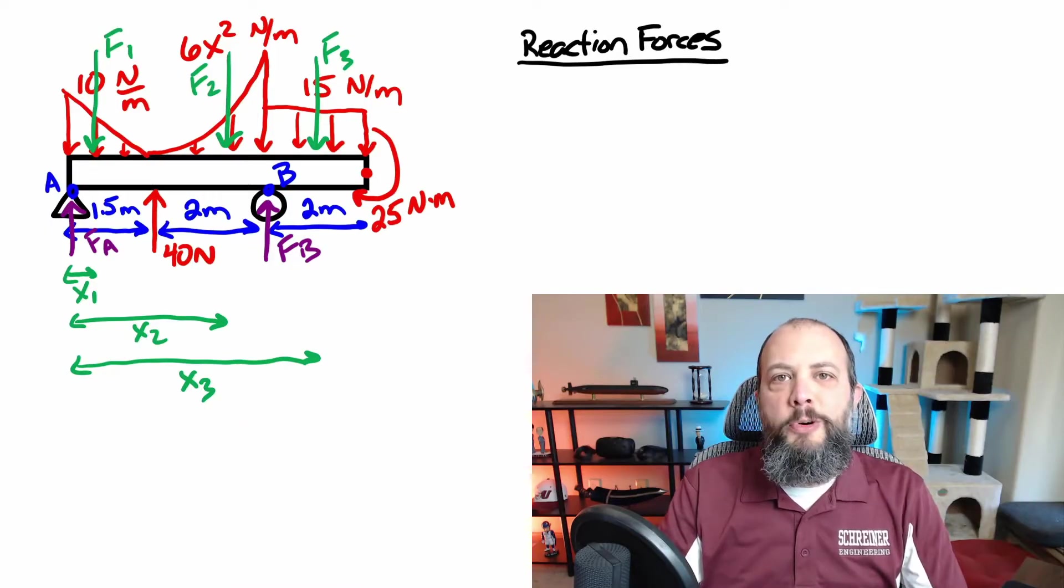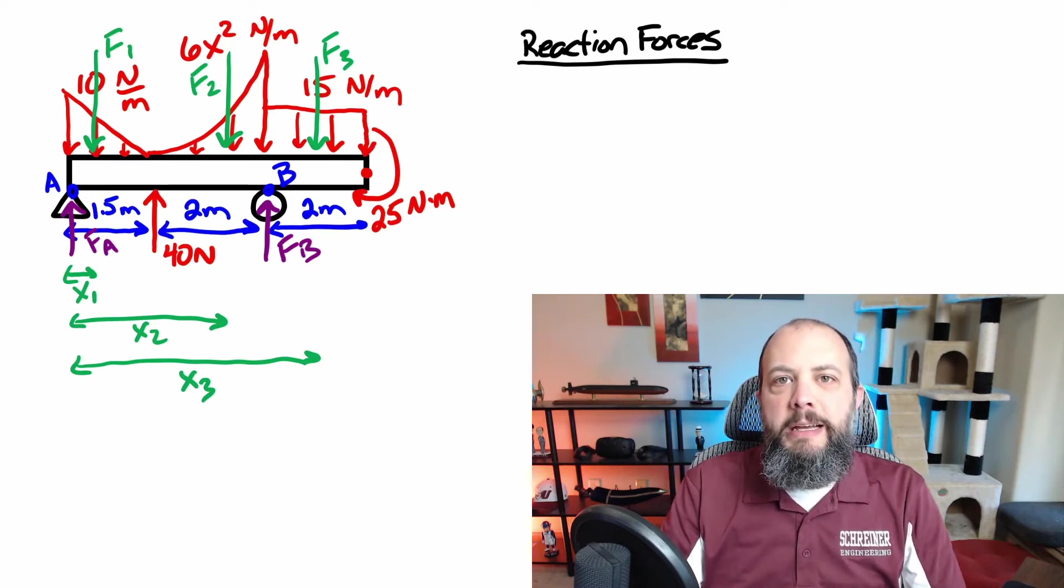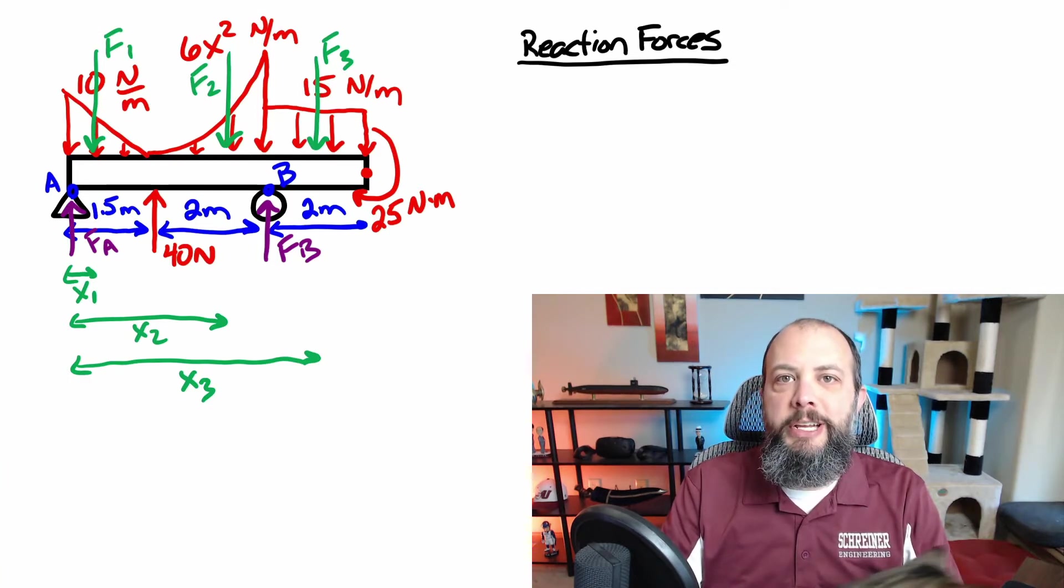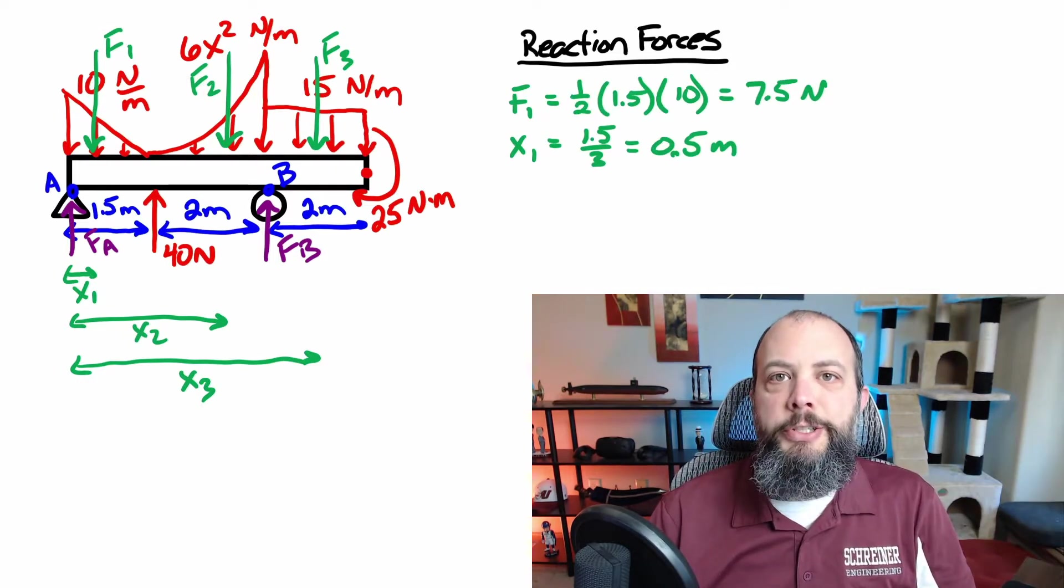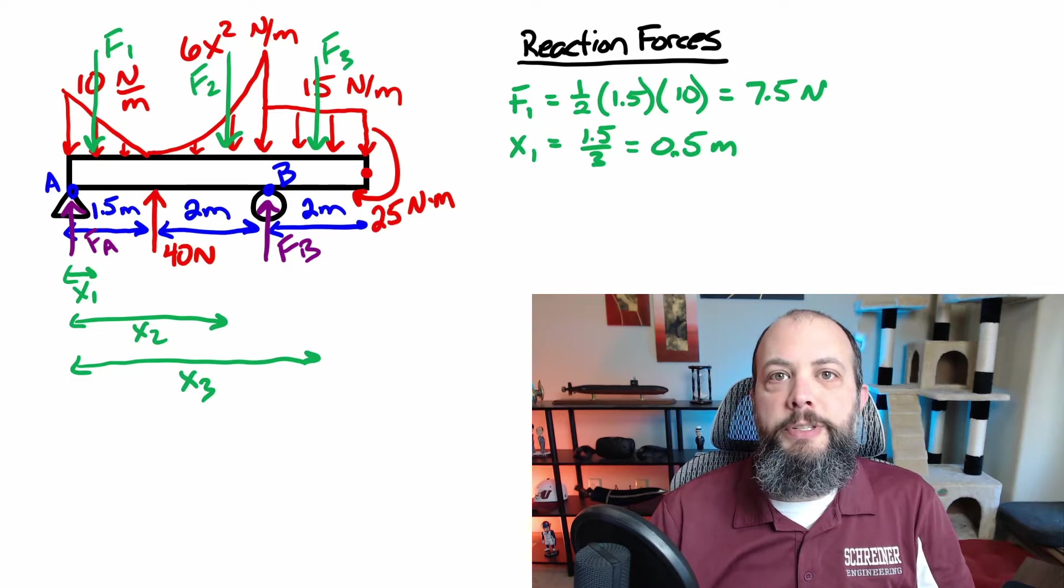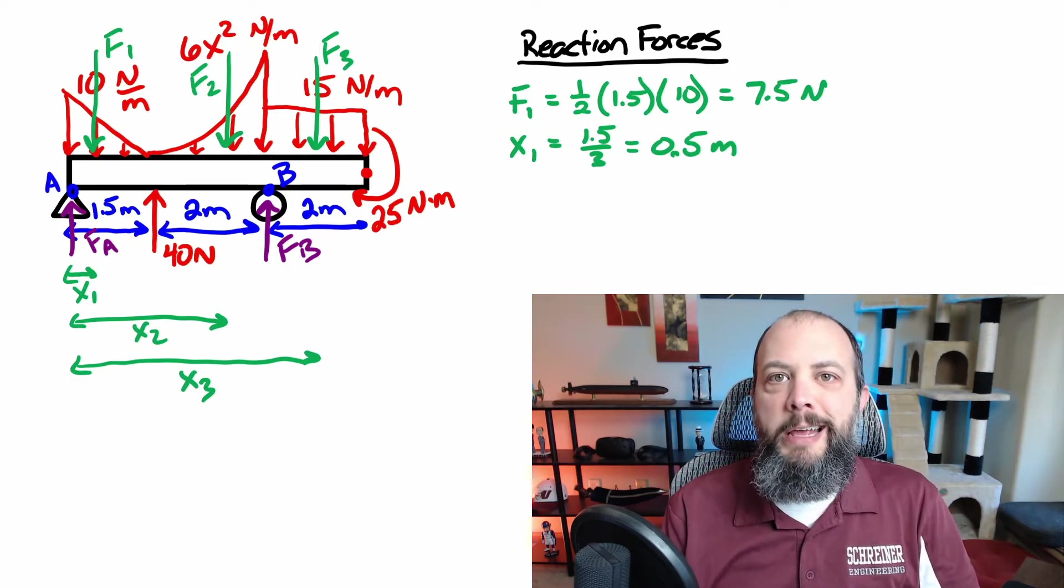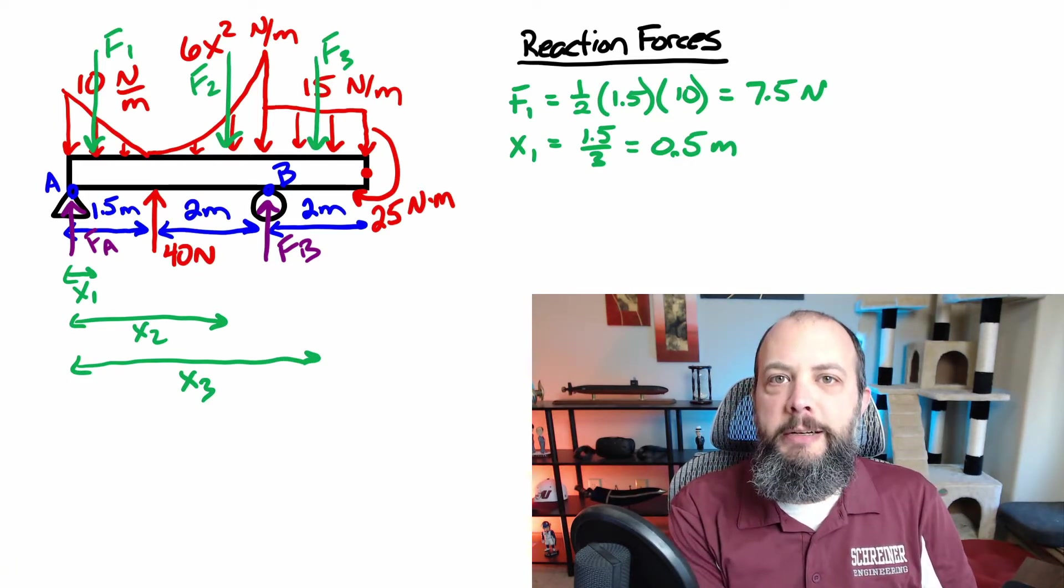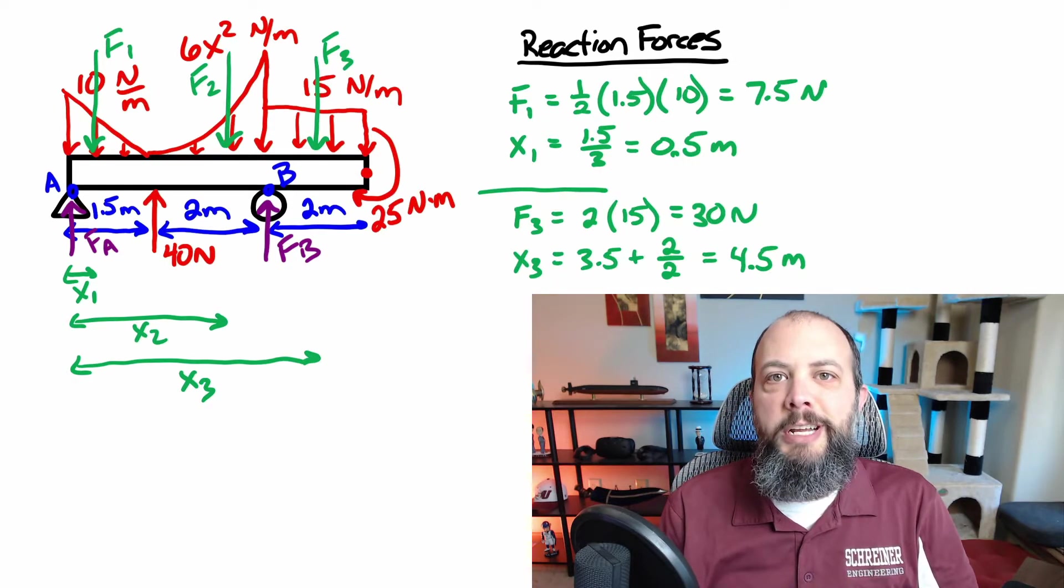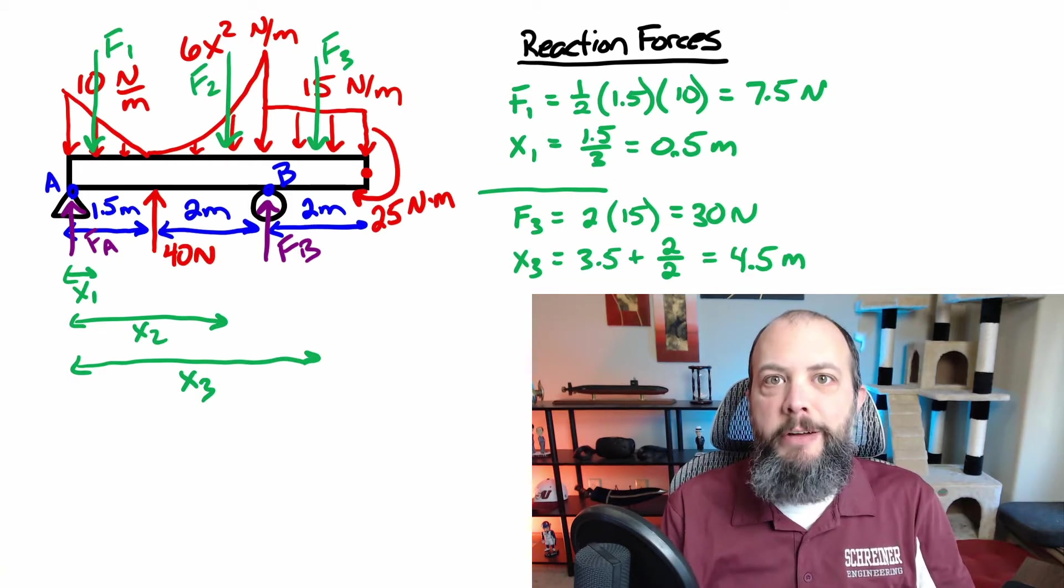In order to find the reaction forces, which I labeled in purple as FA and FB, I'm first going to need to turn the distributed loads into point forces, which I've labeled here in green, F1, 2, and 3 at distances X1, 2, and 3 from the left-hand side. For a triangular distributed load, the point force is just going to be the area of the triangle, one-half base times height, and the location for that force is going to be one-third of the base closer to the tall side. For the rectangular distributed load, the point force is going to be equal to the area of that rectangle, base times height, and the distance will just be right in the middle of the rectangle.